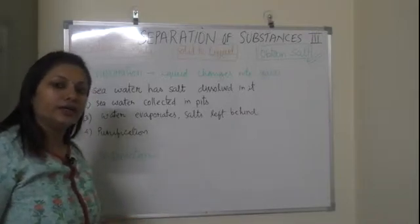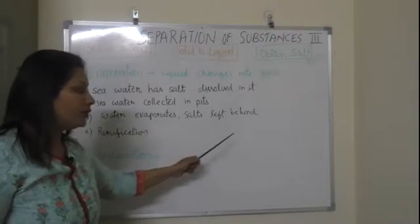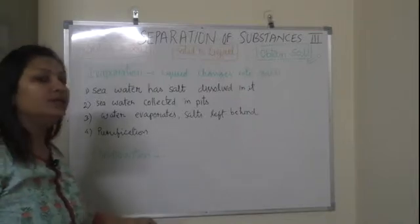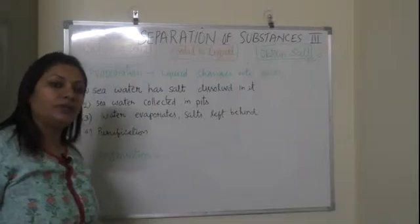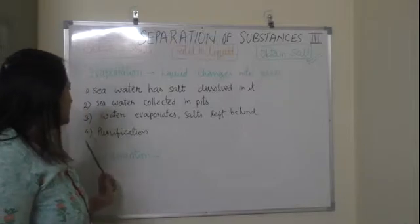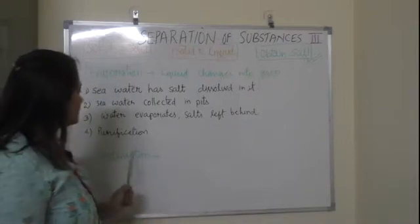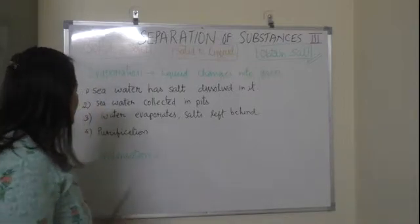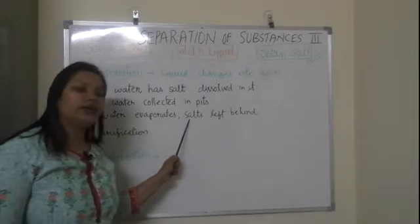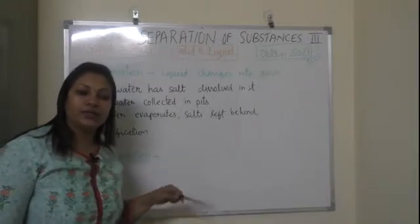The salt that remains at the bottom is collected. After that, we purify this salt and use it as table salt — the salt we use at home for cooking. After purification, the salt goes through a chemical process in industries, gets packed, and comes to the market. This is the evaporation process — salt is a soluble solid, completely mixed in water.